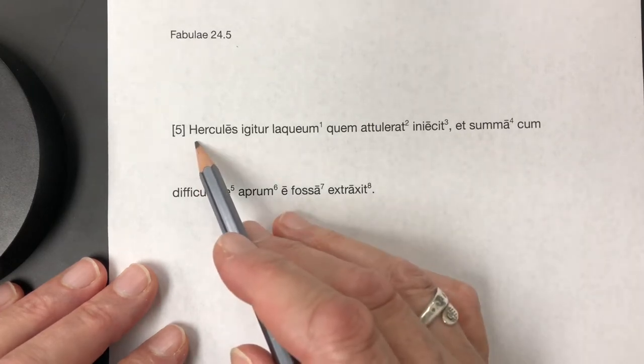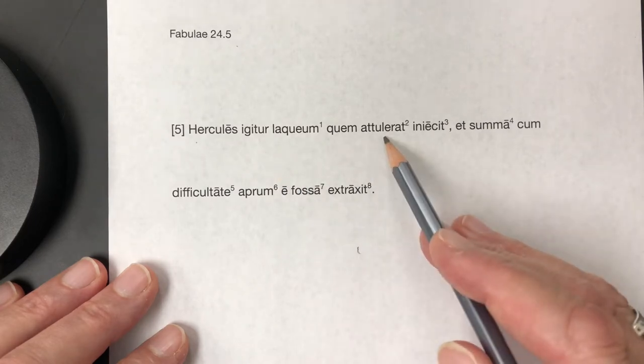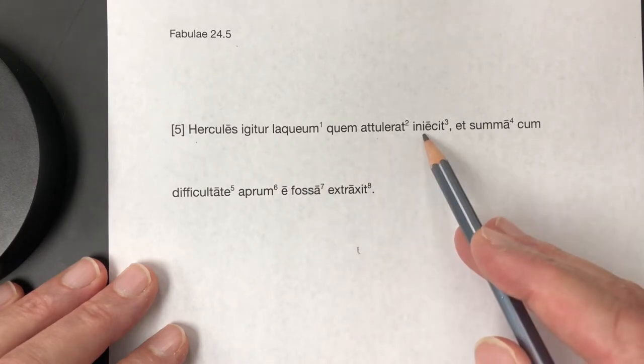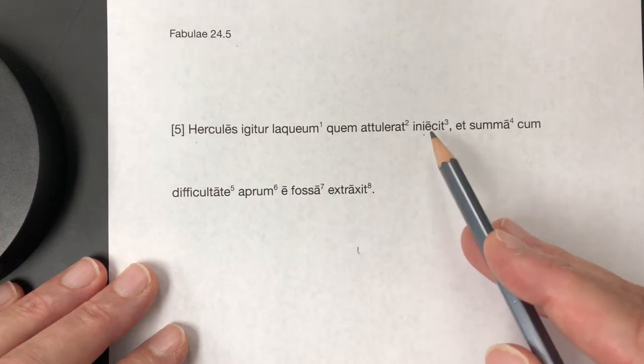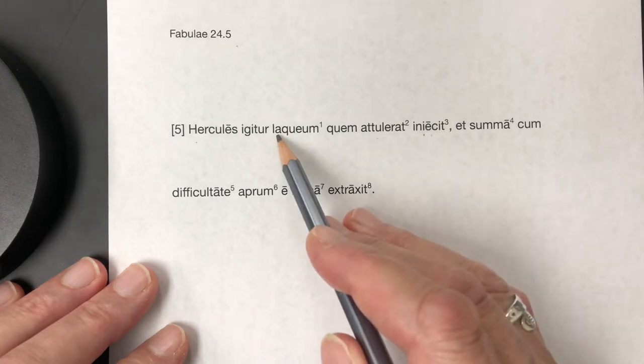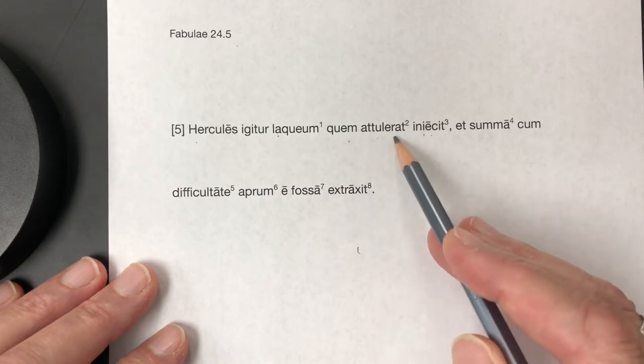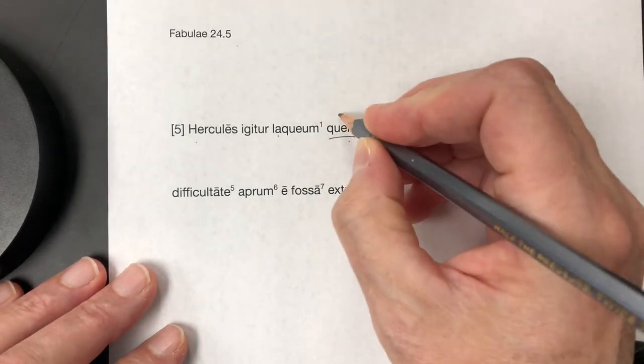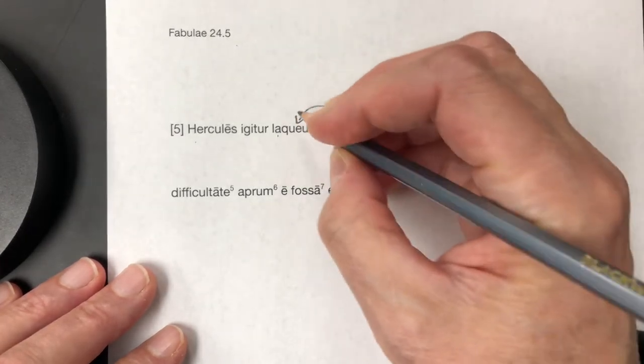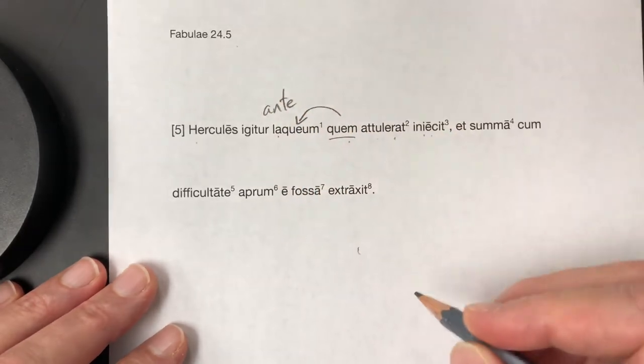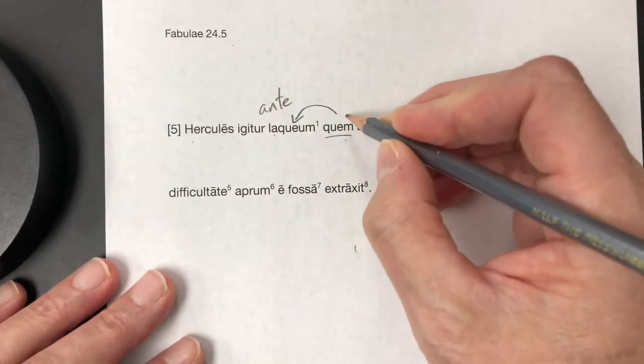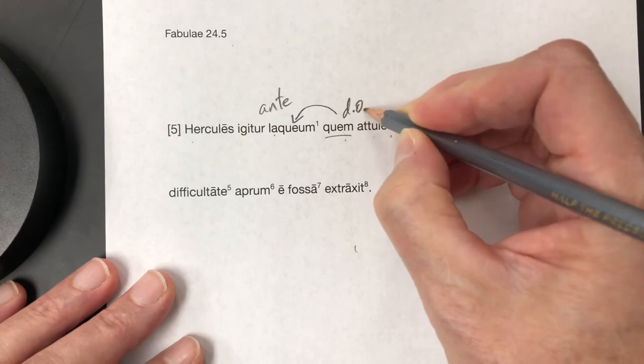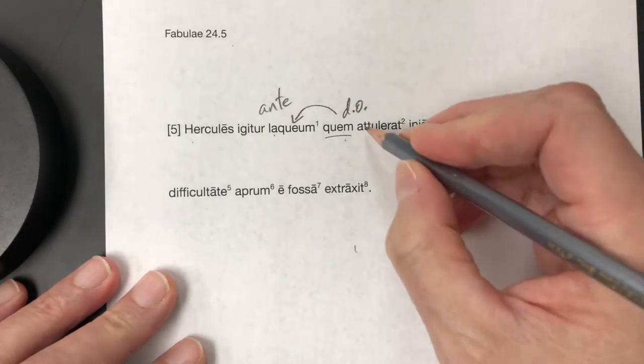So Hercules, iniekit, he threw laqueum, the lasso quem atulerat, which he had brought. So this quem here, relative pronoun, the antecedent is laqueum. That's what it refers to. And in its own clause, quem is the direct object, the D-O of atulerat.